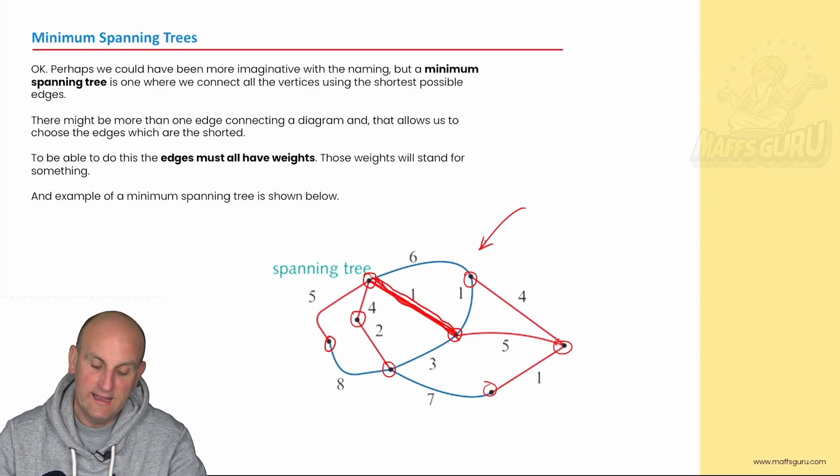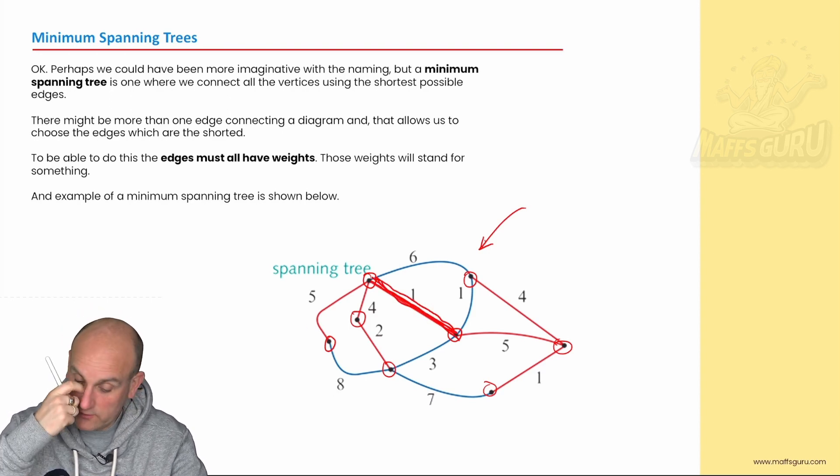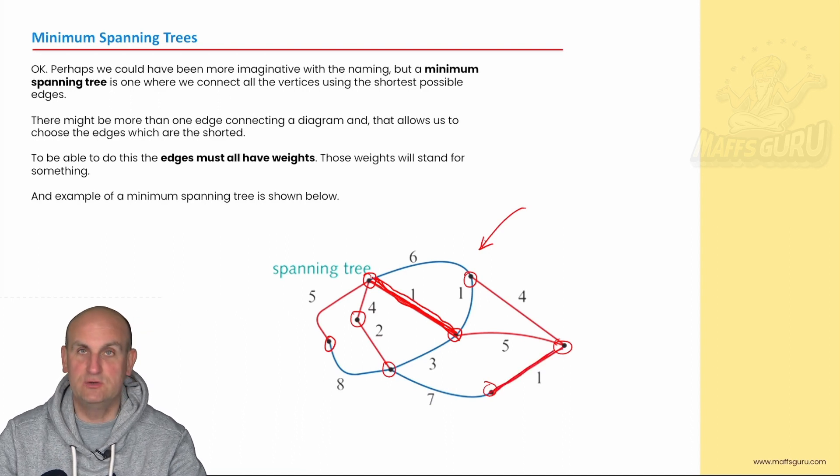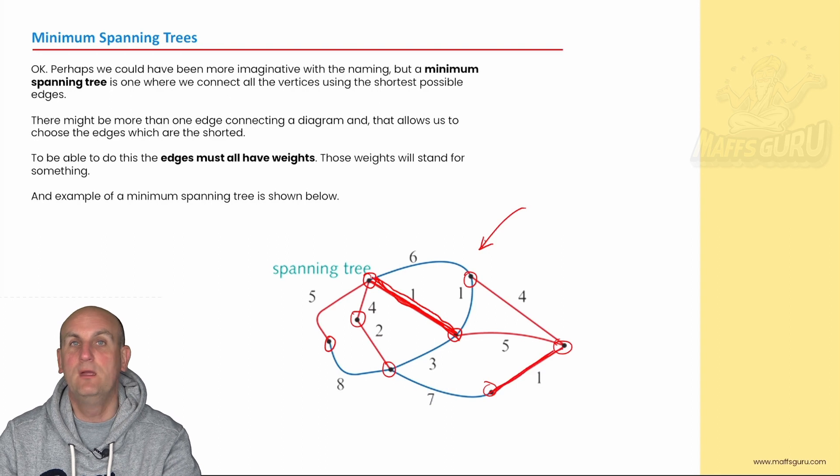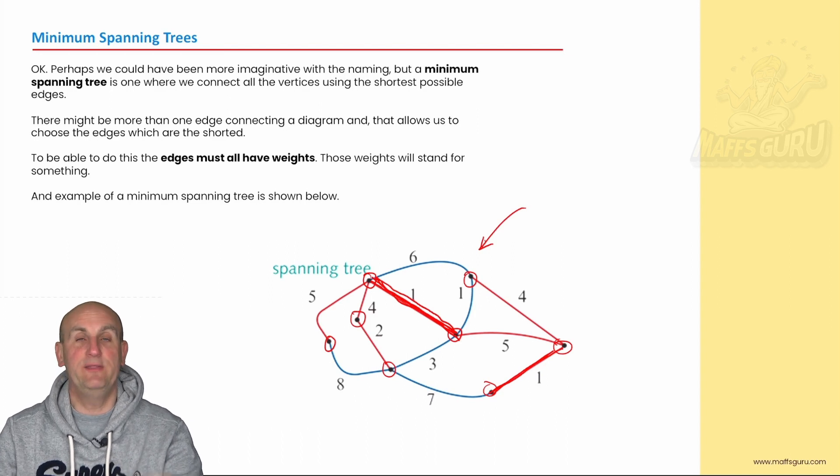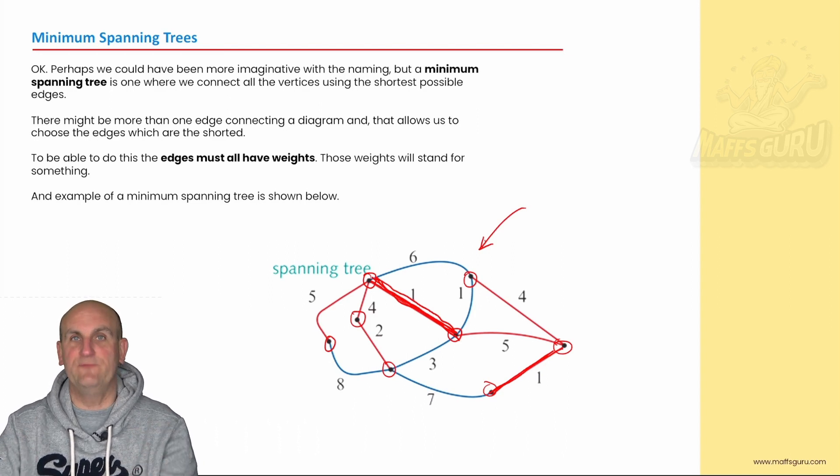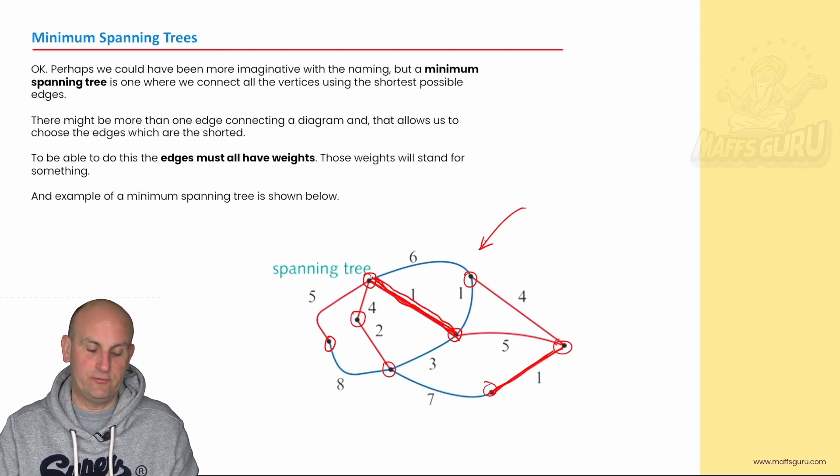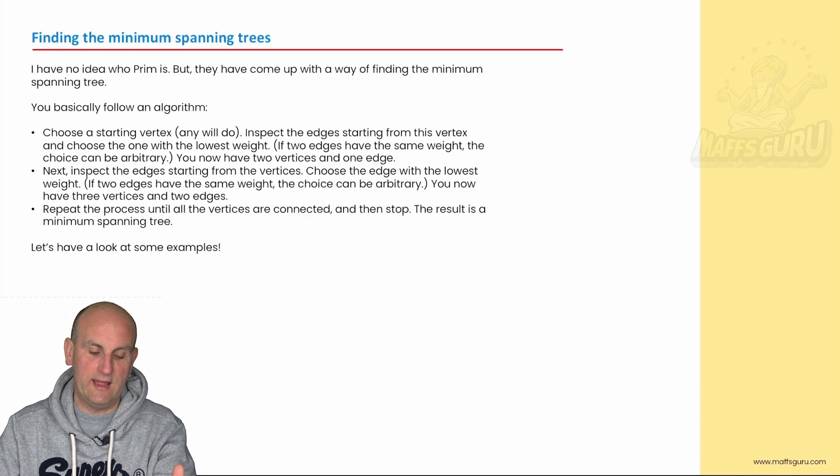And so if we actually look here, that one there, that to me makes perfect sense to use that as a connection between those two points. Why? Because I'm going to only use, say, one kilometre of pipe. Again, here, where else could I use? Well, this one here, there is a one kilometre as well. I could use that one. That's a minimum connection. And when I work my way around the diagram, finding all of these minimum points, then by the end, if they're all connected together, all my vertices are connected together, then we have a minimum spanning tree.